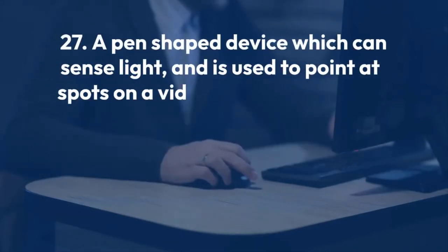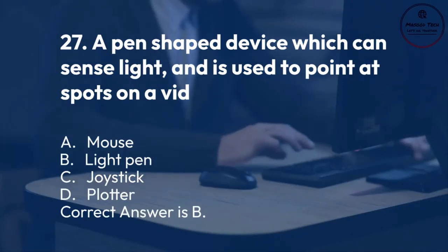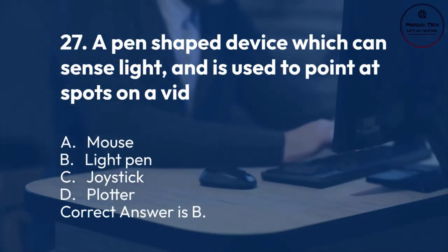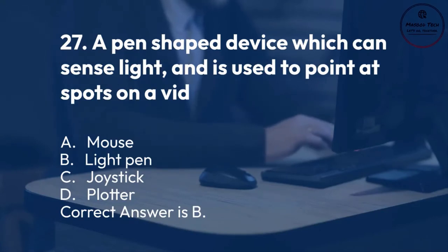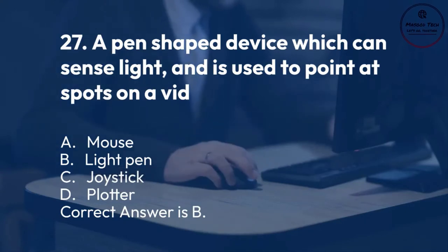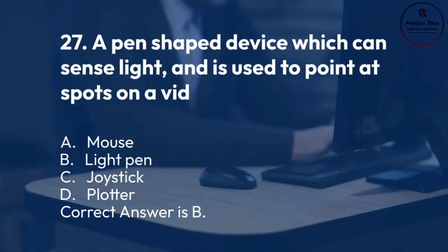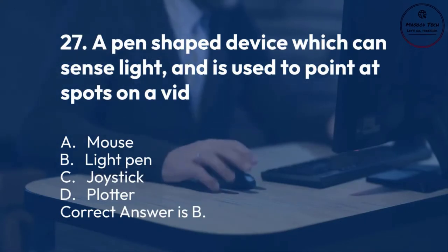Number 27. A pen-shaped device which can sense light and is used to point at spots on a video screen: A. Mouse. B. Light pen. C. Joystick. D. Plotter. Correct answer is B.